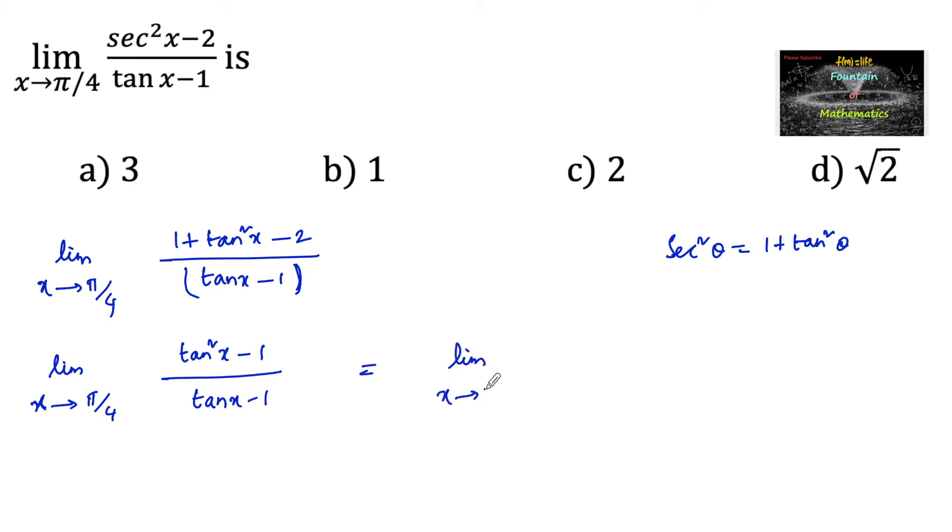This can be written as limit as x approaches π/4, tan squared x minus 1, we can write as tan x plus 1 times tan x minus 1 in the numerator, and tan x minus 1 in the denominator. We can cancel tan x minus 1.